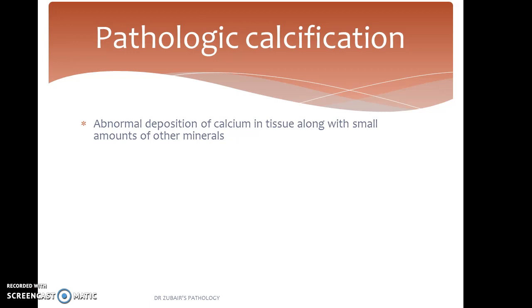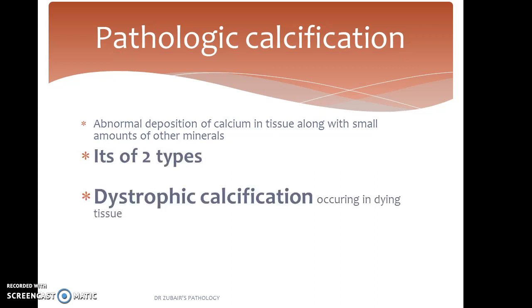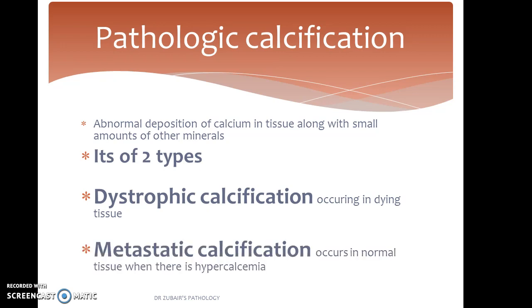Pathological calcification is abnormal deposition of calcium in tissue, along with a small amount of other minerals. It is of two types: dystrophic calcification, occurring in dying tissue, and metastatic calcification, which occurs in normal tissue when there is hypercalcemia.